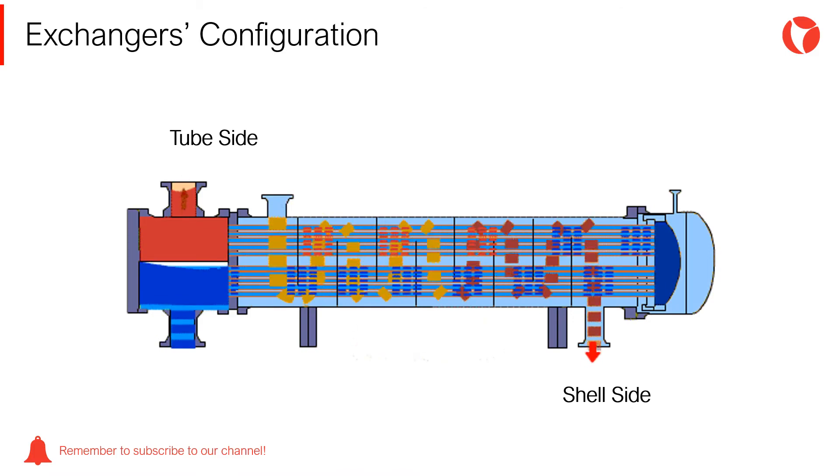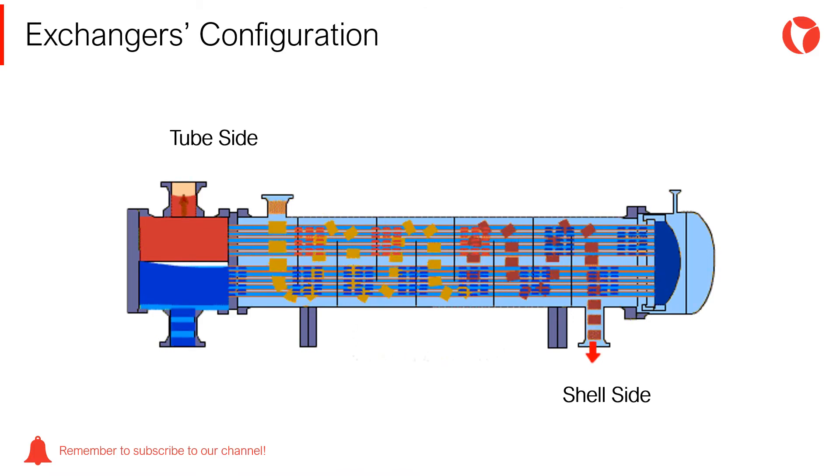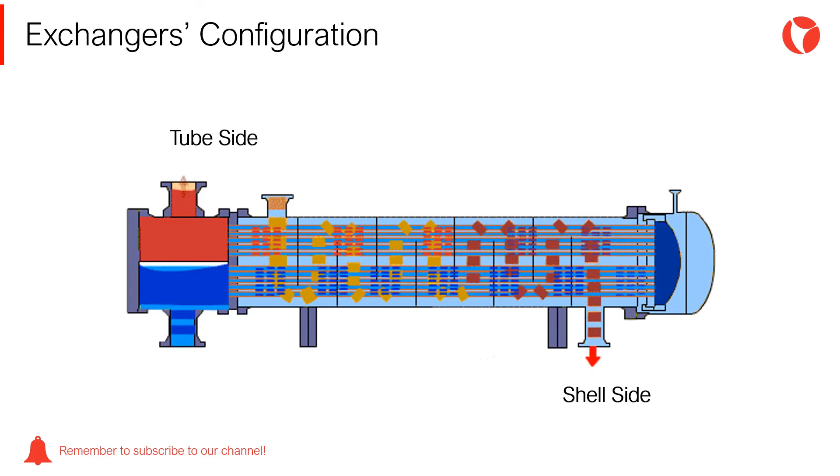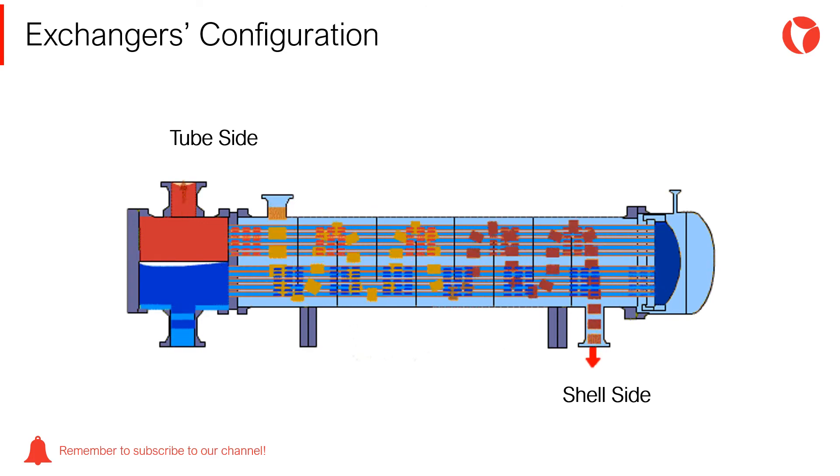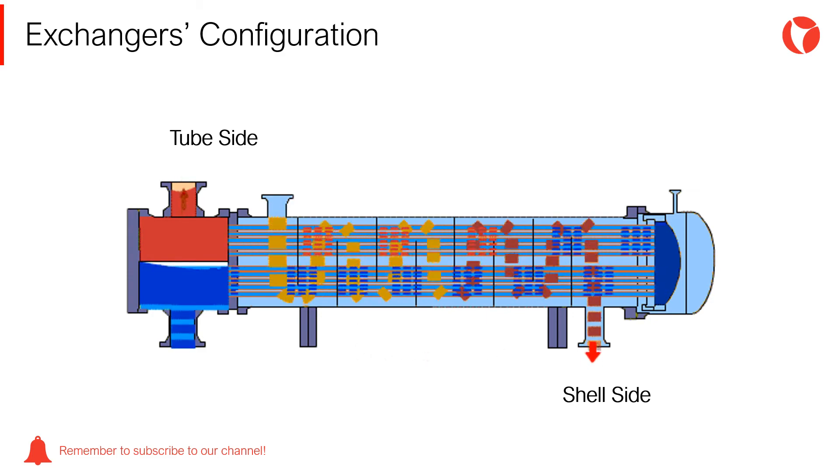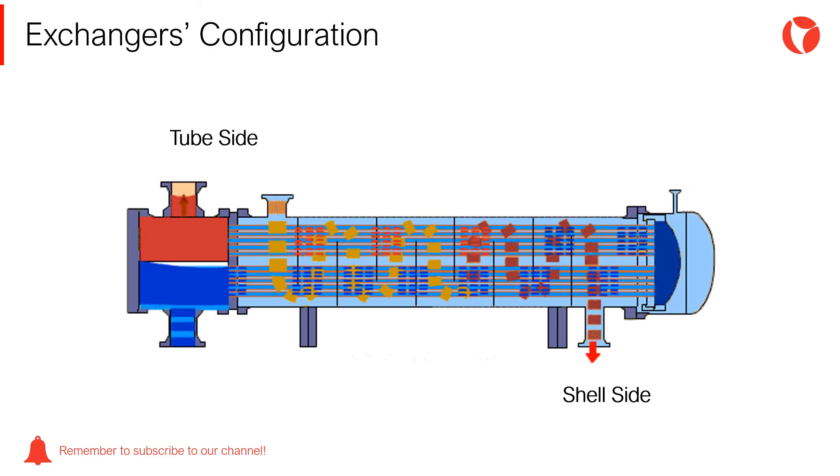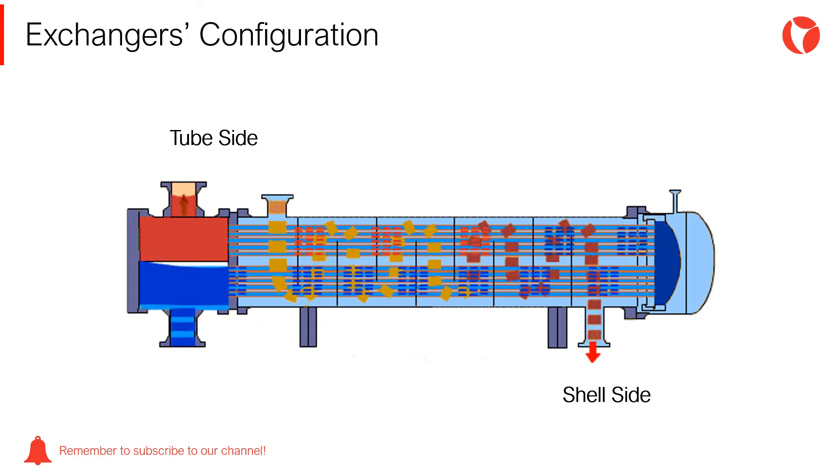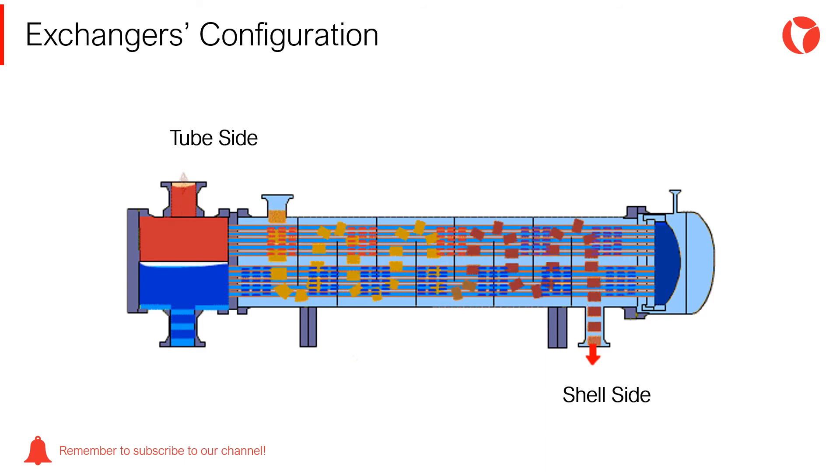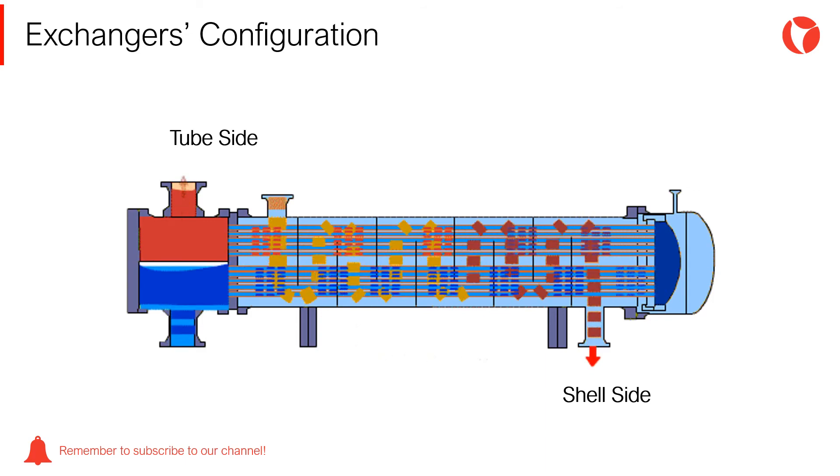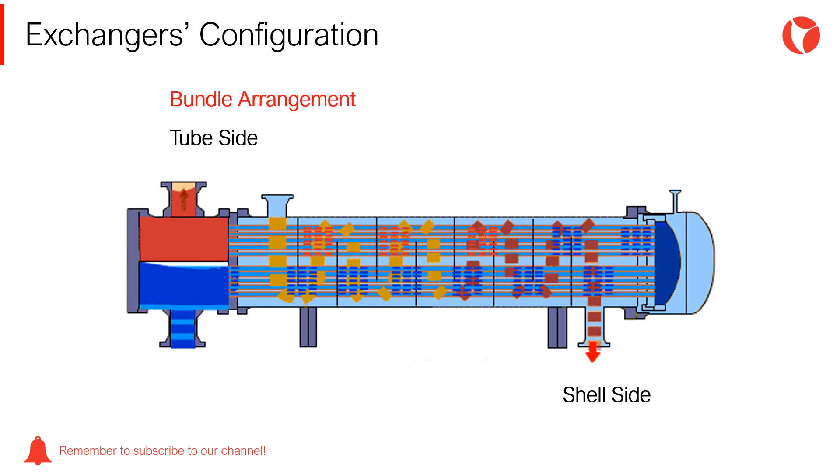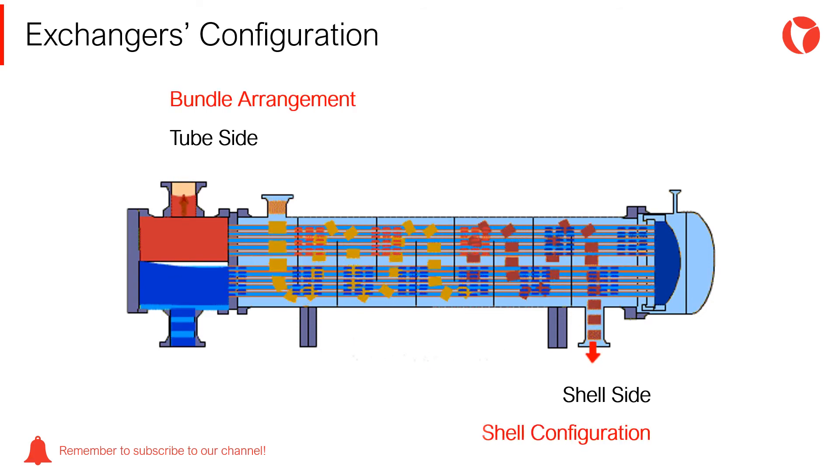In order to understand the configuration of this type of equipment, it is necessary to bear in mind that there are two different fluids circulating inside the exchanger without mixing. For this reason, the equipment is divided into two circuits, tube side and shell side. Therefore, to understand the arrangement of shell and tube heat exchangers, it is essential to study the bundle arrangement and the shell configuration.